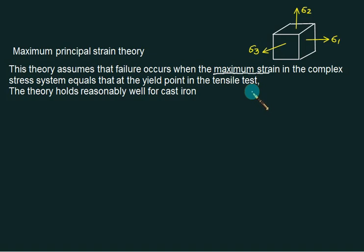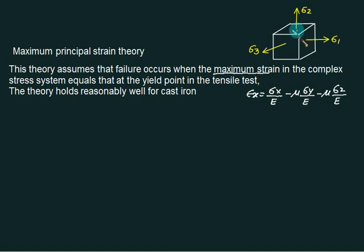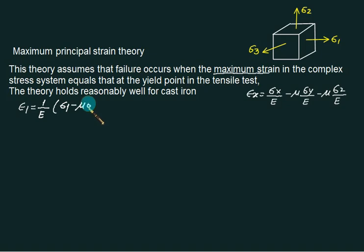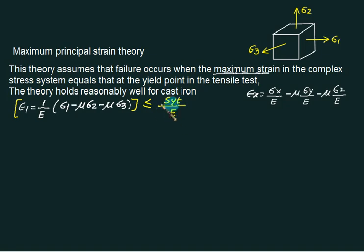Using Hooke's law, epsilon X = sigma X/E − μ(sigma Y/E) − μ(sigma Z/E). We can find principal strain epsilon 1 by substituting sigma X = sigma 1, sigma Y = sigma 2, sigma Z = sigma 3: epsilon 1 = (1/E)[sigma 1 − μ·sigma 2 − μ·sigma 3]. This maximum principal strain must be less than or equal to SYT/(E × FOS), where SYT is the yield strength and FOS is the factor of safety.